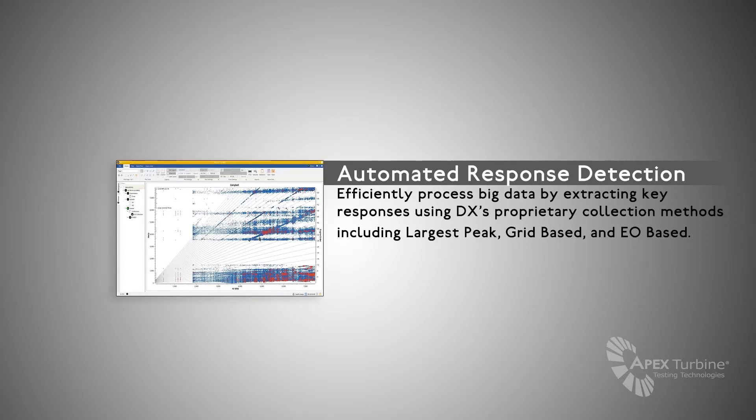APEX's improved automated response detection feature, formerly called Collections, helps users efficiently process big data by extracting key responses using proprietary methods including largest peak, grid-based, and EO-based detections.